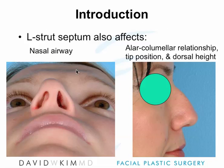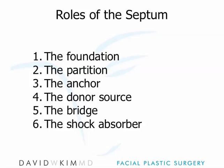This is seen in these patients. The bottom of the septum is crooked off to this patient's side, causing obstruction and deviation. The septum is overdeveloped on the bridge of this patient, causing a big bump. So the septum clearly has several roles inside the nose.